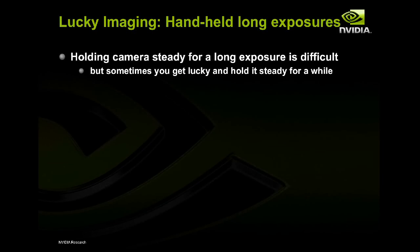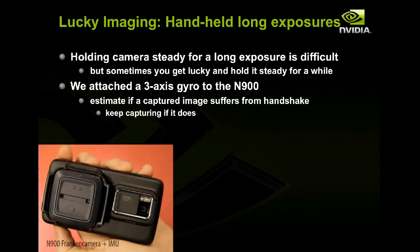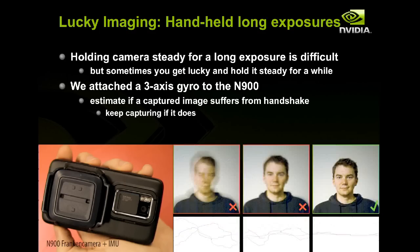That's not the only way of taking images in low light. You can just set the exposure time long enough and try to hold the camera really steady. If you try several times, maybe you get lucky. Rather than forcing the user to press and check repeatedly, the user presses once and we attach a gyro to the camera and look at the signals it tells us. If it's shaky, the image is likely to be shaky and we just throw those images away. Once we get one image where the camera is steady enough, then we can keep that.